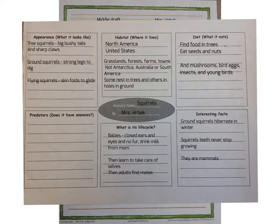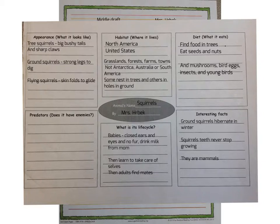Then you'll need to look back at your notes page. You won't write about every single note you took in your final research paper — you're only going to choose two categories to write about. Look at yours and think about what two categories you want to write about. Make sure you have at least two, if not three, good facts for the category you choose.